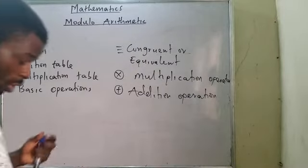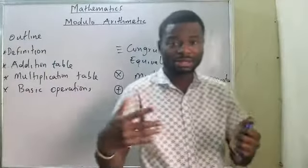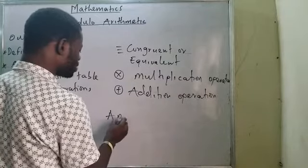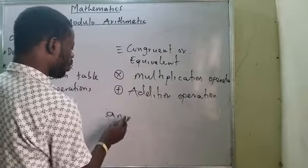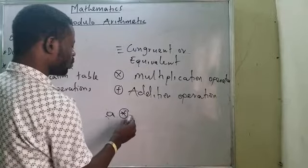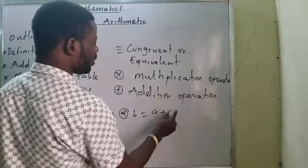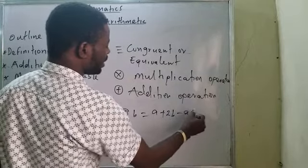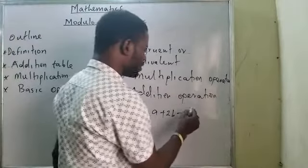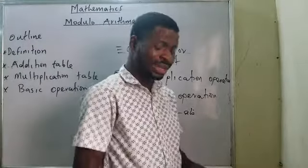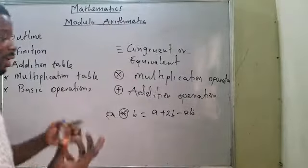Some problems will be given to you, and some people may decide to define the operation and some may not. For instance, if I have: A operated with B equals A plus B plus 2B minus AB — at this point, this is the operation. This is the definition of the operation, and you will proceed the same way you go on your binary operation system.